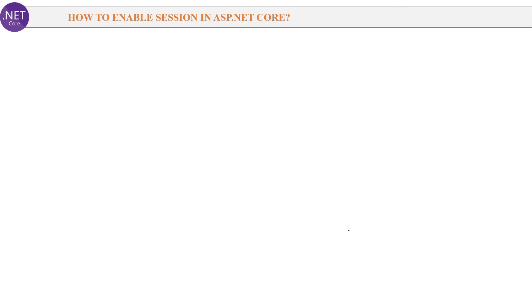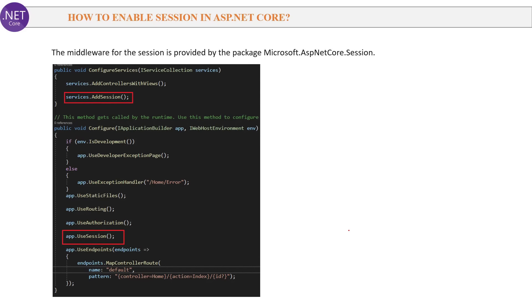Next question: How to enable session in ASP.NET Core? The middleware for session is provided by the package Microsoft.AspNetCore.Session. Add the AddSession service in ConfigureServices and add the middleware component app.UseSession() in the Configure method of the startup class. That will enable session in ASP.NET Core.